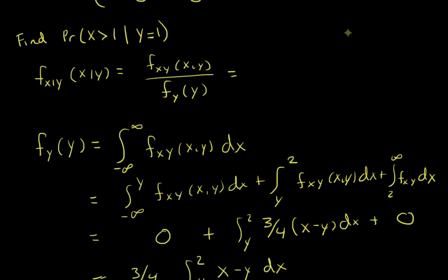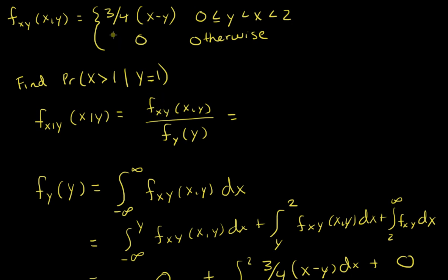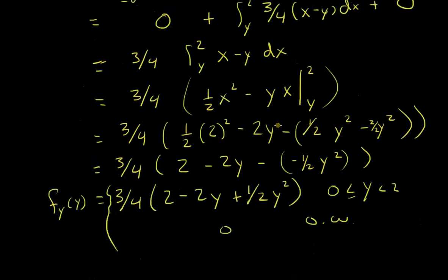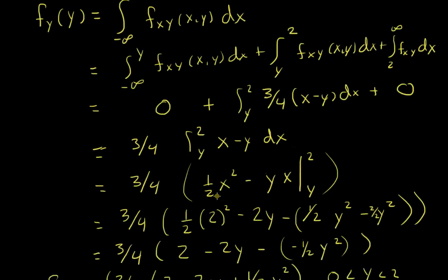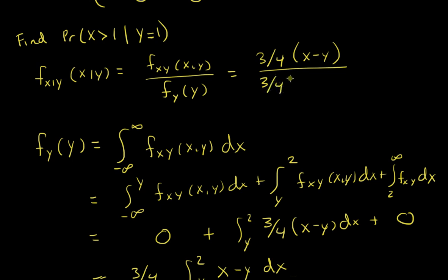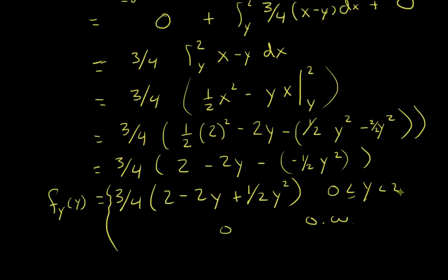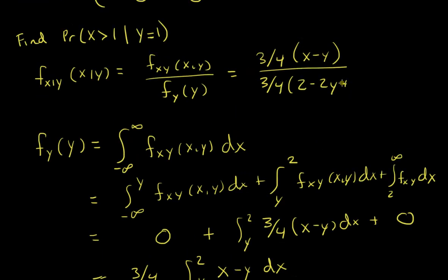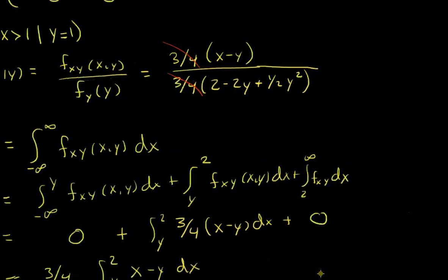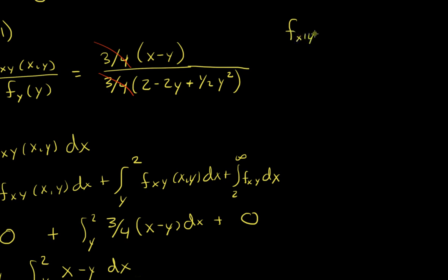Let's plug that into our formula. We know the joint distribution for x and y is three-fourths times (x minus y), and the marginal distribution of y is three-fourths times (2 minus 2y plus one-half y squared). The three-fourths cancels, so my conditional distribution for x given y has x minus y in the numerator and 2 minus 2y plus one-half y squared in the denominator.